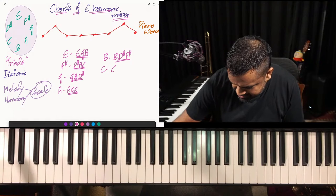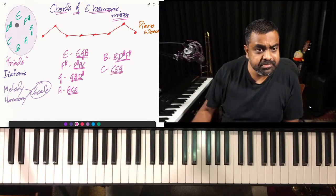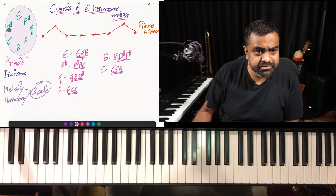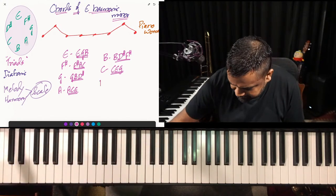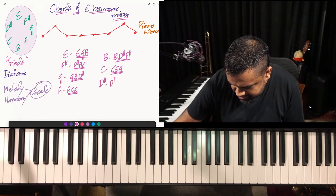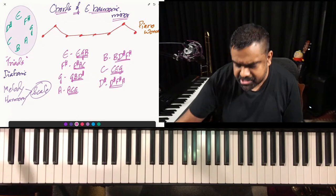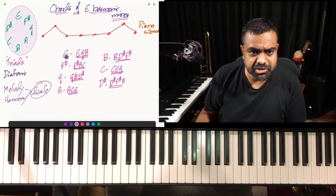Then you're on C: C, E, G. Again, thirds and triads. And then D#, F#, A — that's your D# chord. I'm just naming each chord by its root, which is the first note. So those are all the triads.